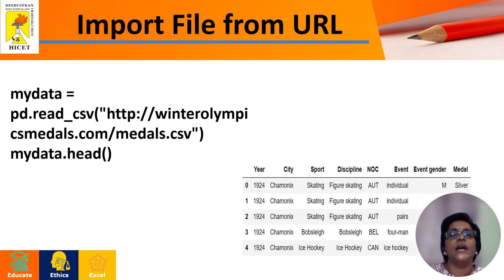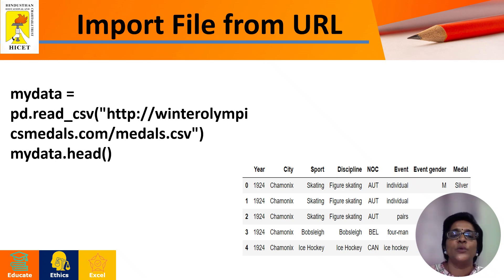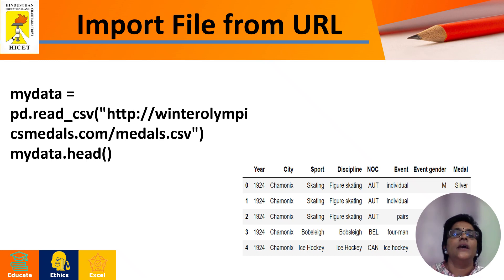Next, we are going to import a URL file from a website location. We are going to use the read_csv function and within it include the URL information. In this case, I'm going to import the URL from http://winterolympicsmedal.com/medals.csv. So if the web URL points to a CSV file, it will be loaded directly into the Pandas DataFrame.